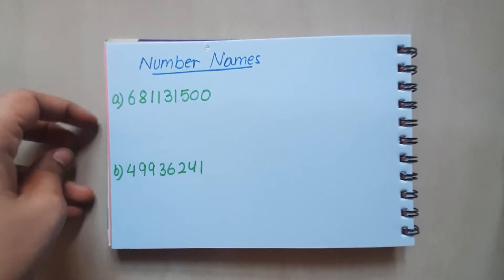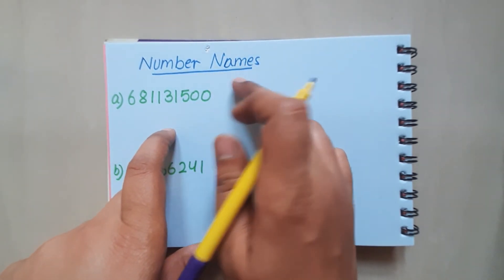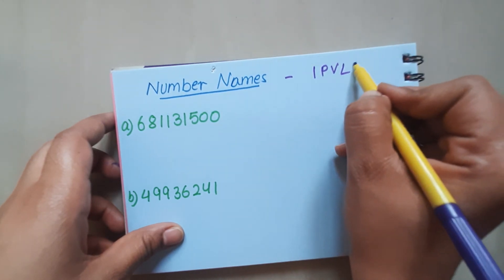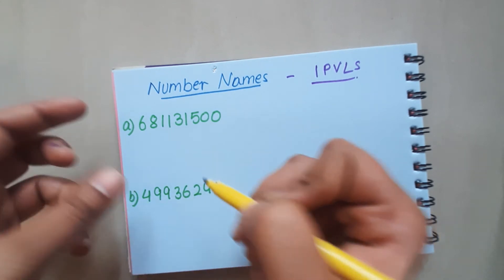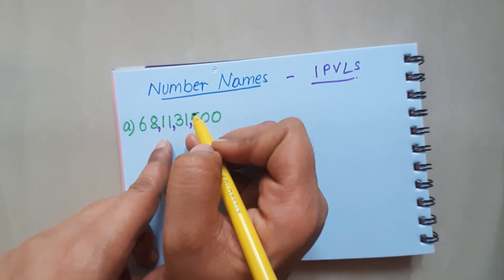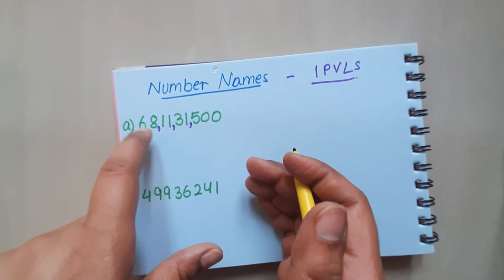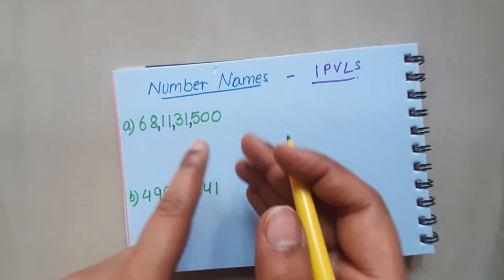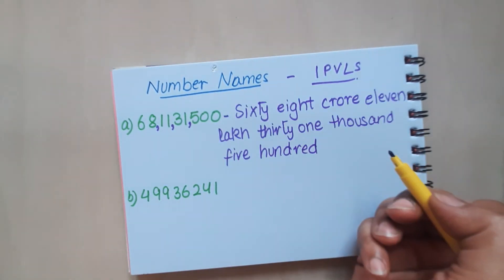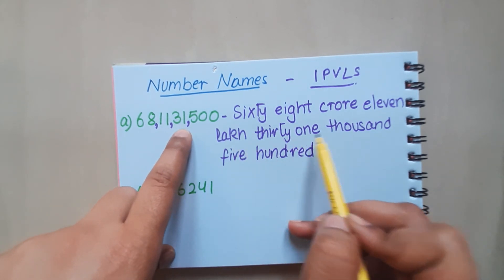Before going, let me take one more very important concept — number names. You have been doing this from the very beginning but it becomes very important with large numbers. Number names follow the Indian place value system. For this large number, let us first mark the periods with commas. Now it is easy — we start with crores: it is 68 crore 11 lakh 31,500. Whatever you are reading or speaking, you have to write it down — that's the number name.